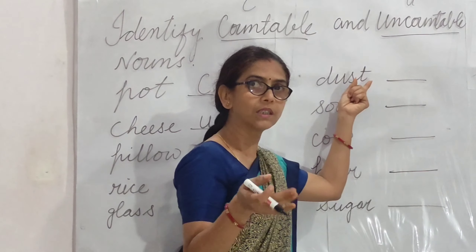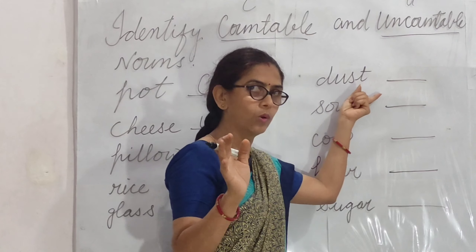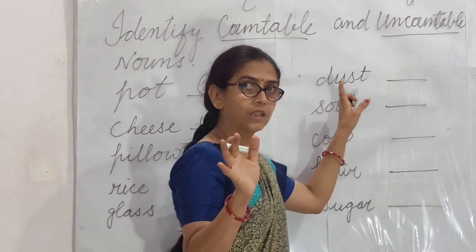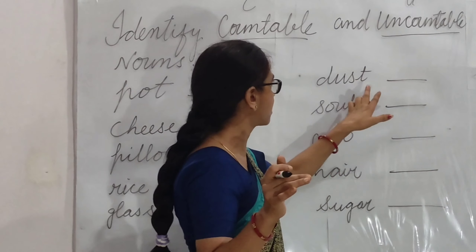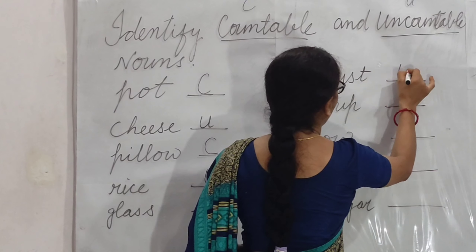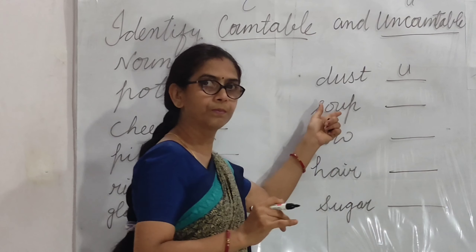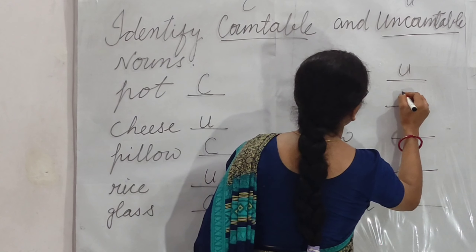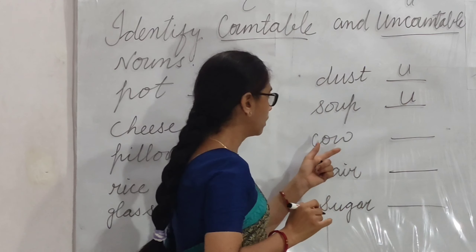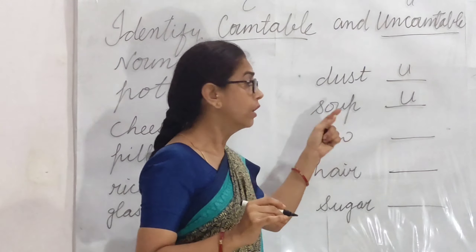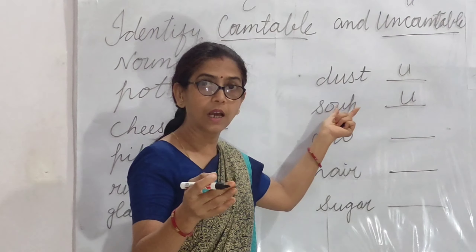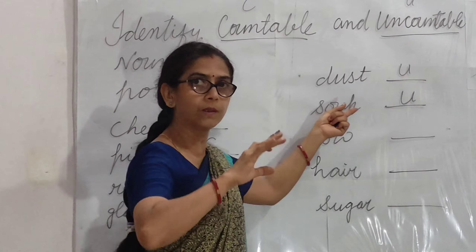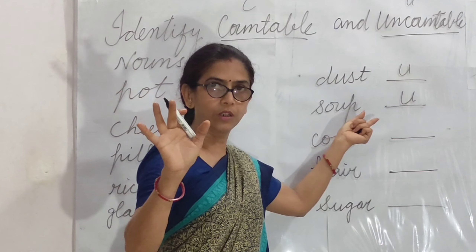Dust — dhul ko aap din sakte ho? Nahi, aur iska plural bhi nahi hota. Dusts koi word nahi hota. So dust is uncountable. Soup — soup ko hum count kar saktay hain? No. Dekho, aap soup ke liye expression use kar saktay hain — a bowl of soup. We can use the expression but we cannot count it, so soup is uncountable.